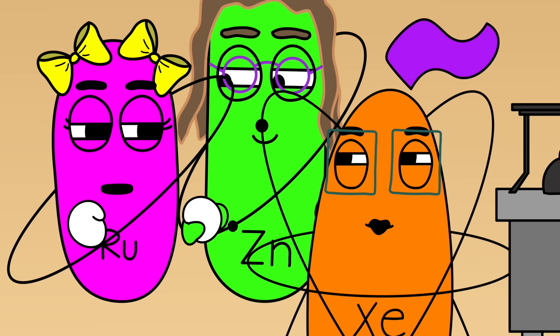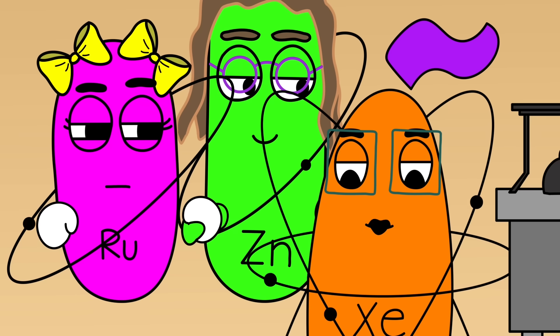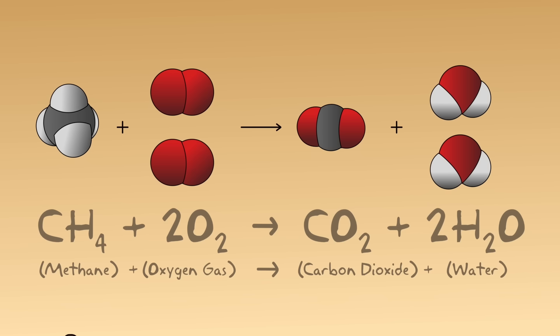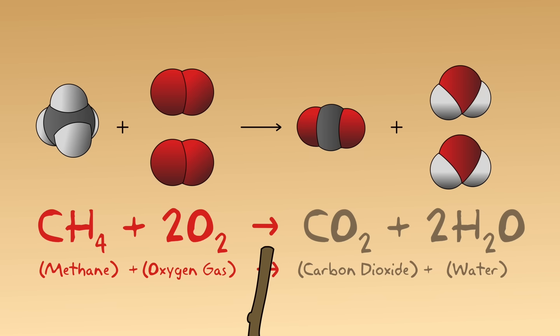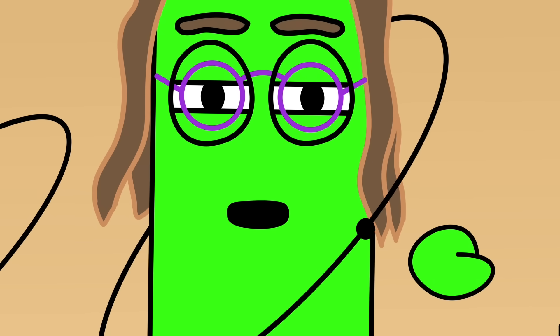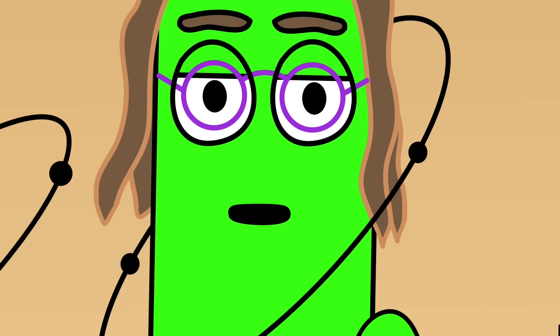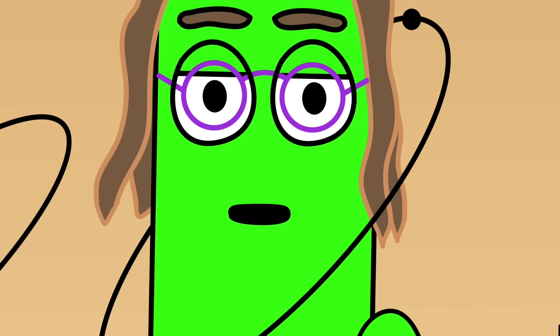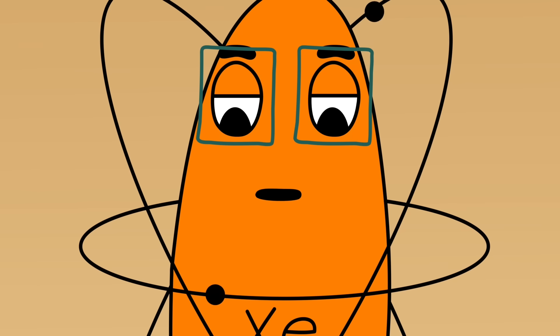Xenon: As I was saying, Ruth and Zinc — we see methane in this chemical formula combined with oxygen from the air, and this arrow means it yields to become carbon dioxide gas, plus water vapor. The atoms in each part of our chemical reaction do not disappear. They just rearrange themselves. Zinc: I get it. It's a chemical reaction, not just a simple physical change.